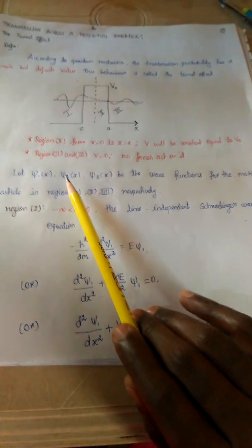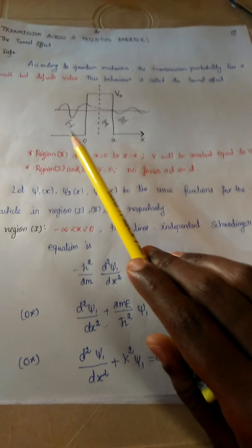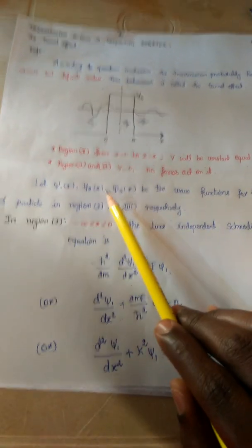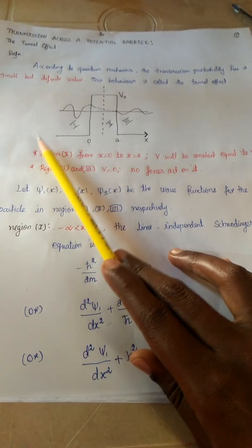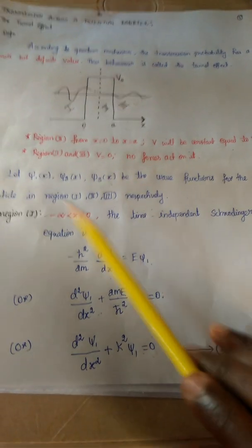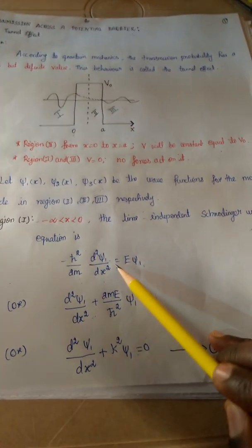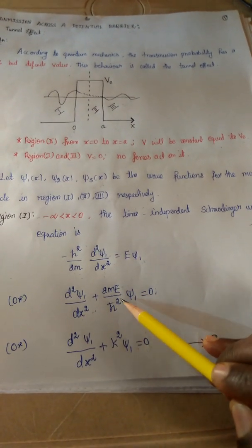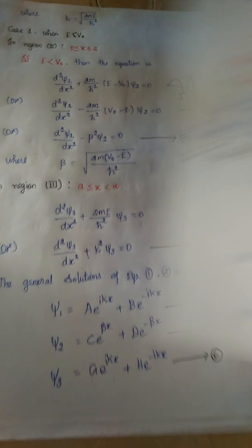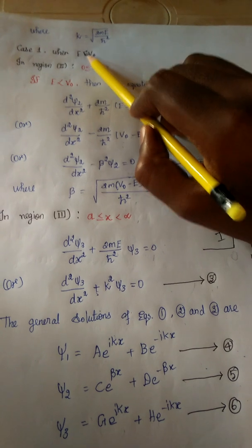We are considering three wave functions for the motion of the particle in regions 1, 2, and 3 respectively: ψ₁(x), ψ₂(x), and ψ₃(x). For region 1, where −∞ < x < 0, the time-independent Schrödinger wave equation is: −(ℏ²/2M)(d²ψ₁/dx²) = Eψ₁. Rearranging gives d²ψ₁/dx² + k²ψ₁ = 0, which is equation 1, where k = √(2ME/ℏ²), for case 1 when E < V₀.